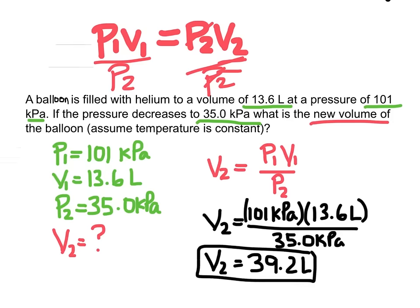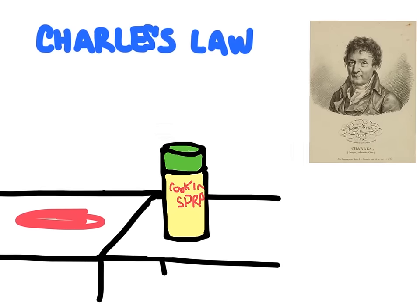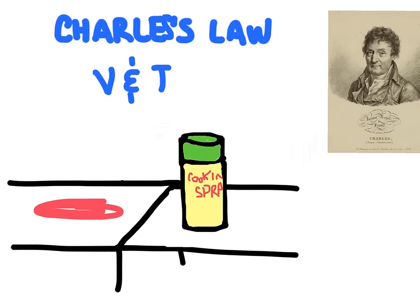That is Boyle's Law. Let's move on to Charles' Law. Charles' Law relates volume and temperature, and was formulated by Jacques Charles, a French chemist, in the late 1700s. Charles said that as the temperature of a gas increases, the volume of the gas will also increase, as long as pressure and the amount of gas are held constant.